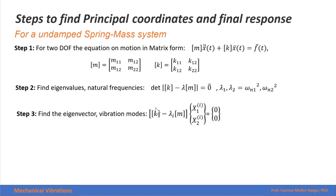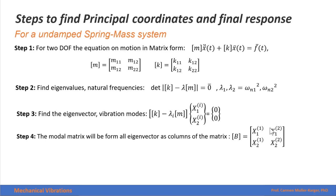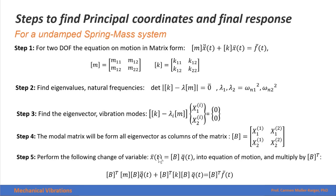Step three is finding the eigenvectors, which are the vibration modes. We introduce each eigenvalue into our equation of motion and find the relation between the two amplitudes. Step four is to construct the modal matrix by placing each eigenvector or vibration mode in columns. Step five is to perform the change of variable so that our generalized coordinate vector is transformed using the modal matrix times the principal coordinate vector.